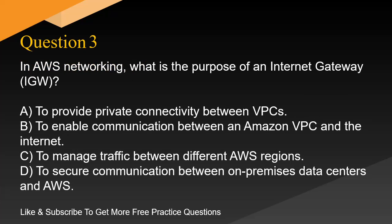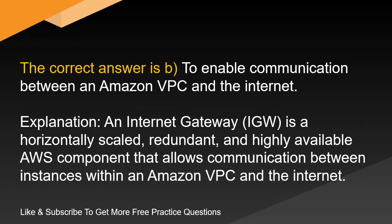Question 3. In AWS networking, what is the purpose of an Internet Gateway, IGW? A. To provide private connectivity between VPCs. B. To enable communication between an Amazon VPC and the Internet. The correct answer is B: To enable communication between an Amazon VPC and the Internet.